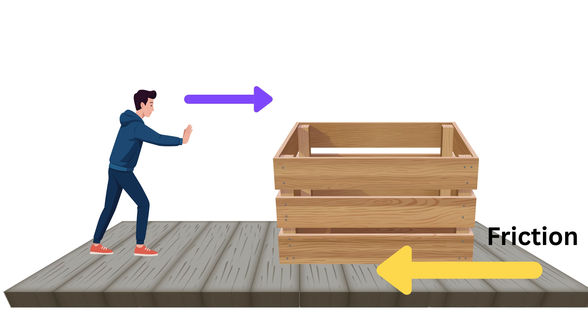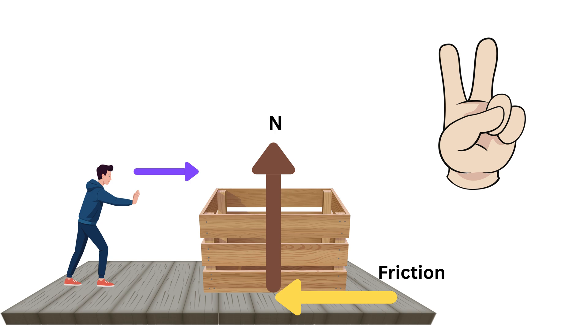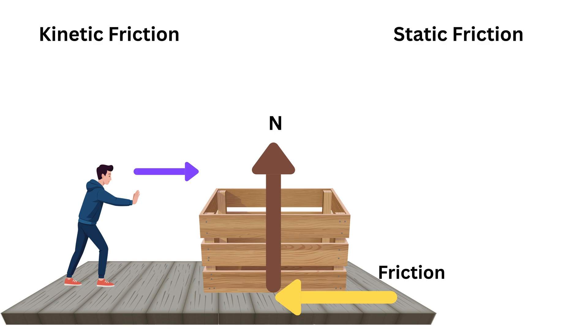Friction always tries to stop your motion or prevent sliding. The stronger the surfaces press together, the stronger the friction. This pressing force is called the normal force and we will write it as n. There are two main types of friction: static friction and kinetic friction.